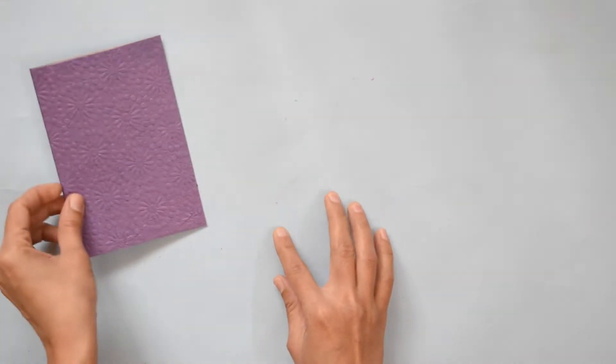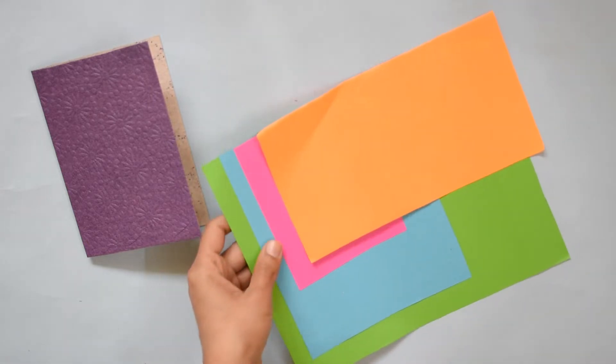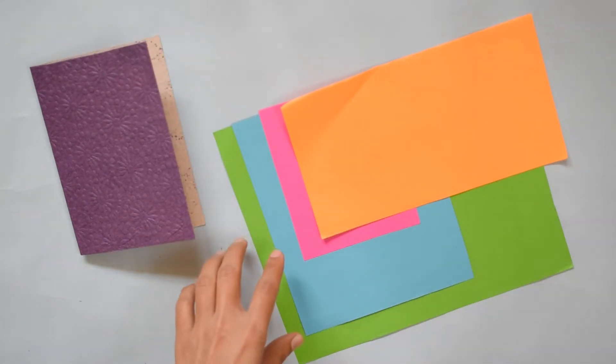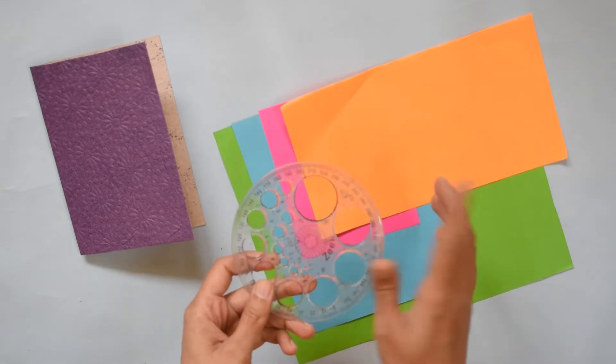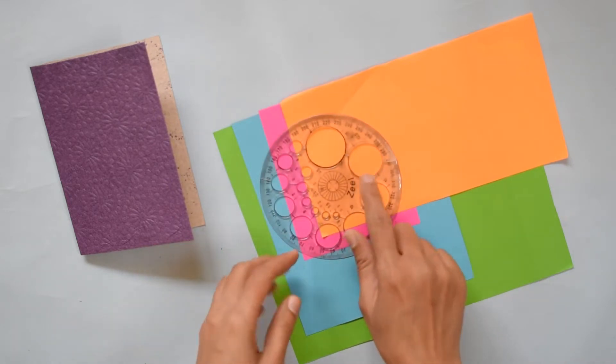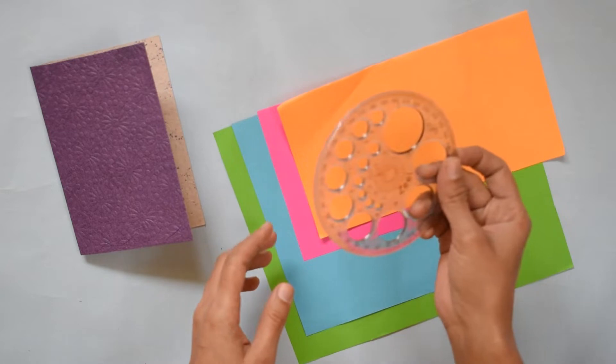Now what we are going to do, take papers of many colors and make circles with the help of any circular object. Here I make a circle with this.